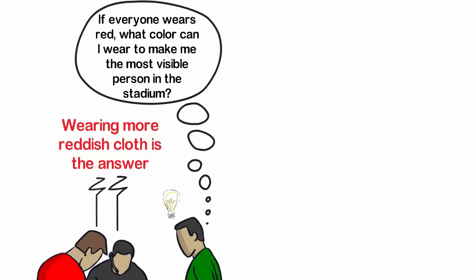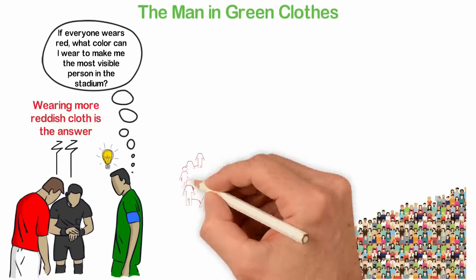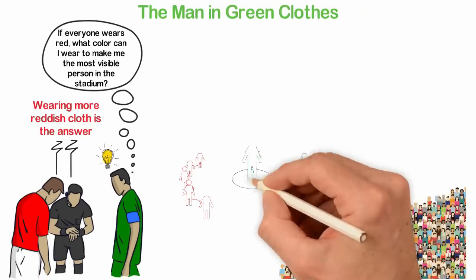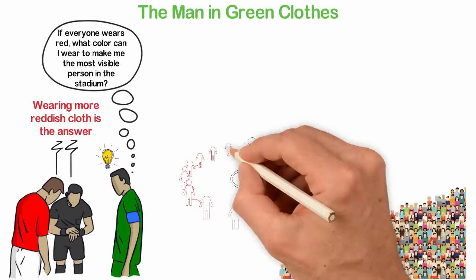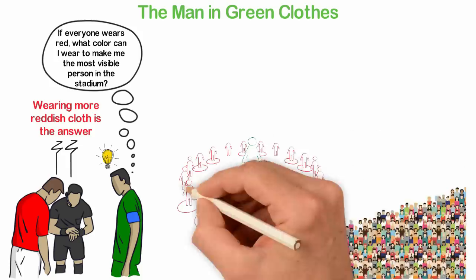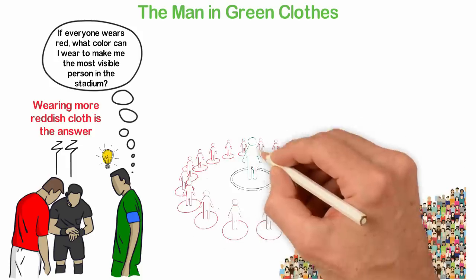There's nothing more attractive in an environment than the contrast of the domineering color of the environment. Since everyone wears red, wearing green should do the magic for me and that is it. The third guy wears green and he became the most visible person in the entire stadium. This analogy is simple to understand but not when people are starting businesses.